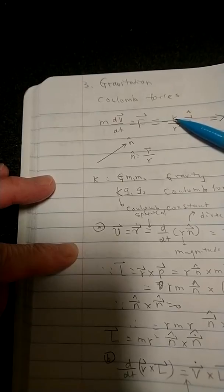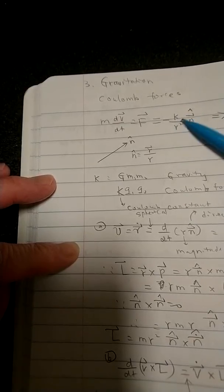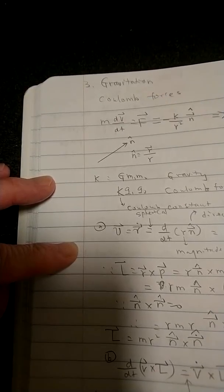Gravitational Coulomb force, and the left hand side of course is mass times acceleration, just equals force. Now the right hand side we have a constant k which I'll explain in a minute.